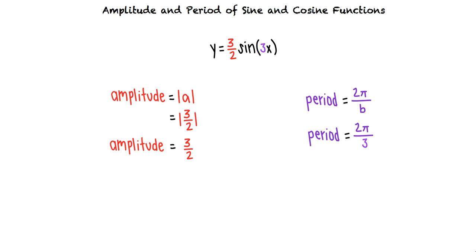So we see that our amplitude equals 3 halves and our period equals 2 pi thirds for the function y equals 3 halves sine of 3x.